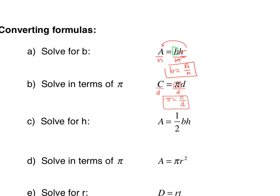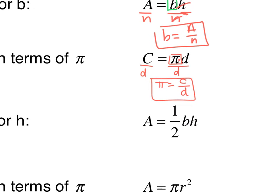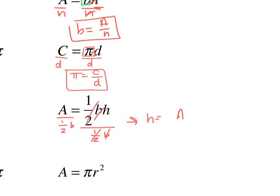For C, I want to solve for H. So I have to ask myself, how do I get rid of a 1 half times B? Well, I divide by 1 half times B. So I get H equals A over 1 half B. And that's your final answer.